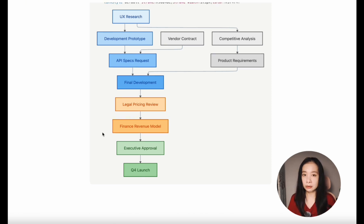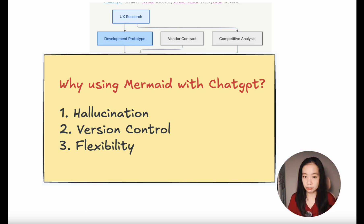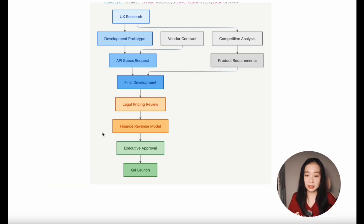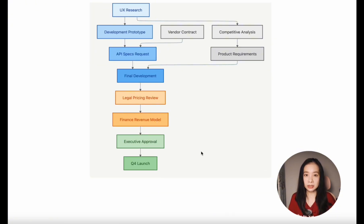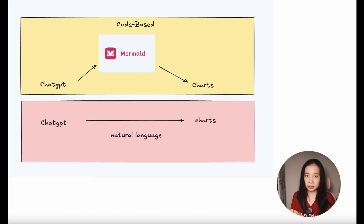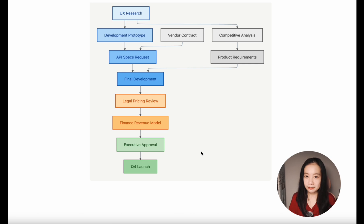Now you might ask: what's special about using Mermaid versus just asking ChatGPT to generate a flowchart directly? You can do that, but there's a higher chance ChatGPT will hallucinate, and it's hard to do any version control. For example, if ChatGPT generated a flowchart, it's hard to ask it to change a color, add a process, or remove a process — very time consuming. By using Mermaid, we significantly reduce the rate of hallucination and uncertainty because we're sharing a code-based solution with AI, and in return the AI can better understand us with much less ambiguity.